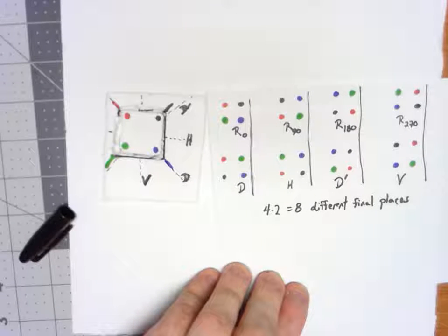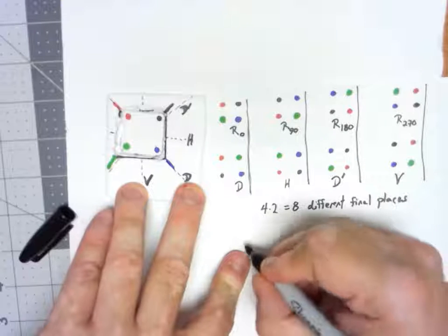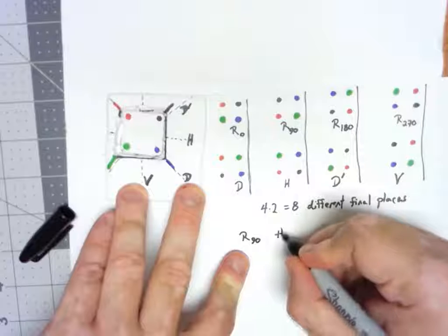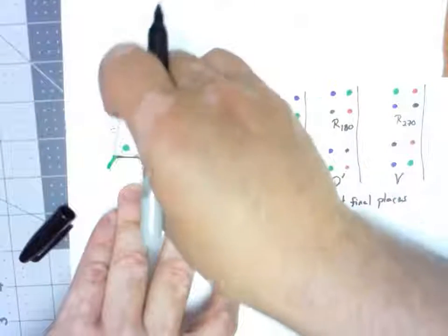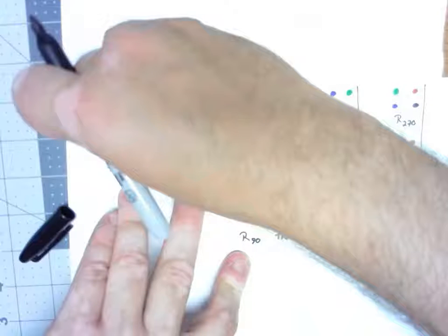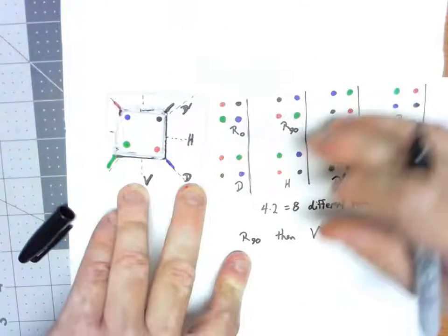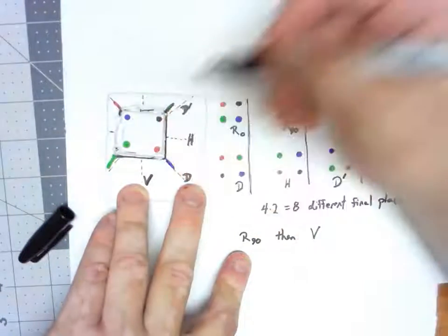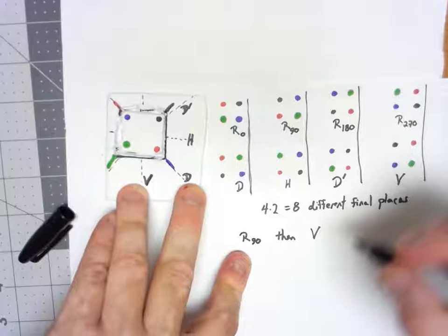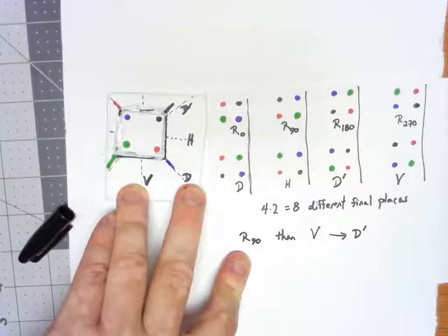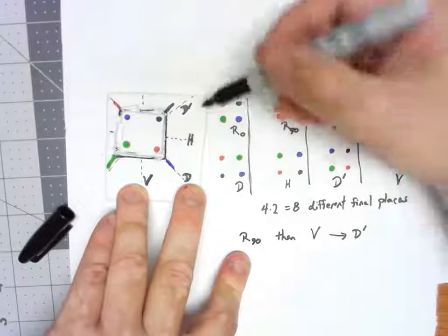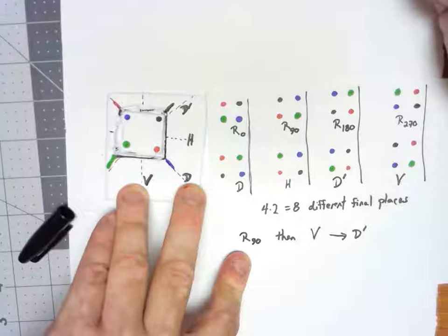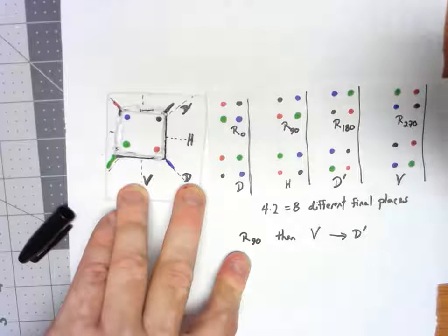So what happens if we start doing more than one move? What would happen if I did, first of all, a rotation by 90 and then do a flip across the vertical line? Let's just take it in a couple of steps. I take it, I rotate 90. Again, it has to be counterclockwise. Like that. So it ends up in this position right here. Which is right here, that gives us a D prime. Doing a rotation by 90, then doing a flip across the vertical line, is the same thing as just doing a single flip across that off diagonal. Let's pause for a second and then we'll pick up in the next video.